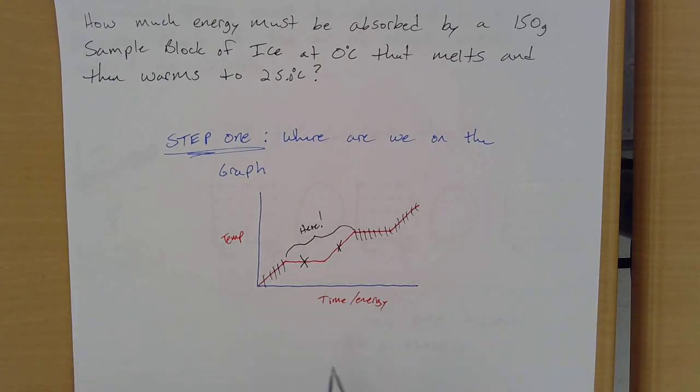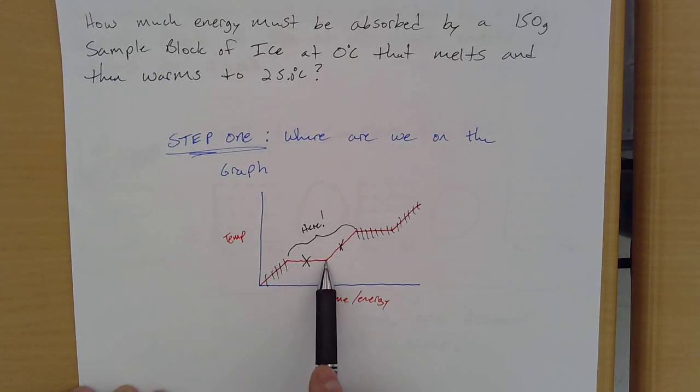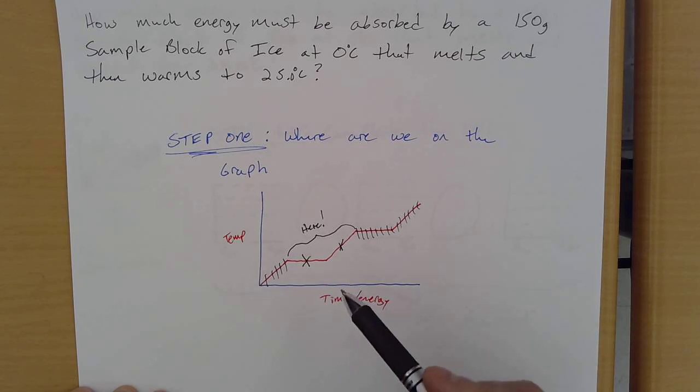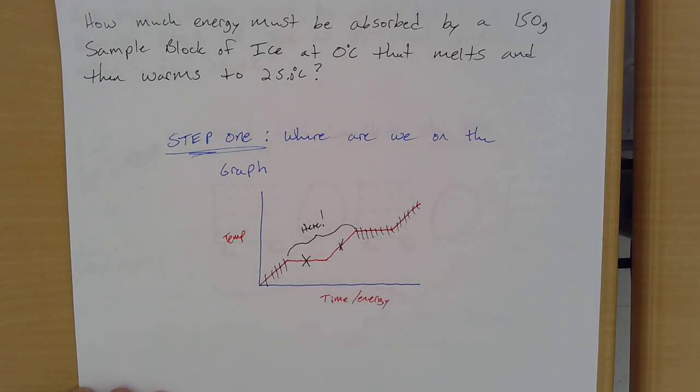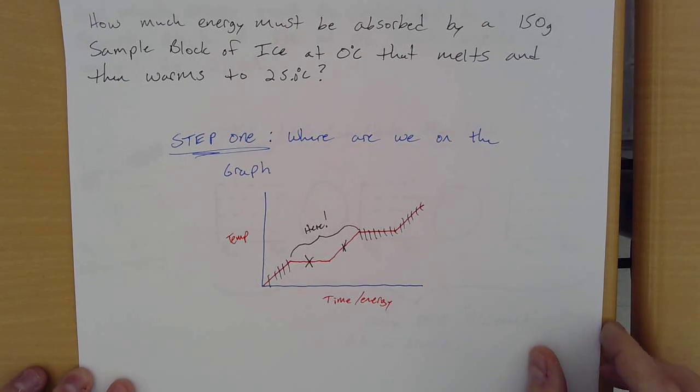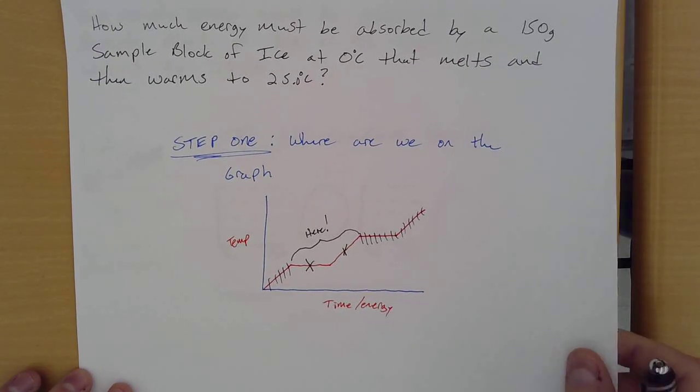So what already you can start to see, I'm going to need to use heat of fusion, right? I'm going to have to melt that ice. And then I'm also going to have to use that heat capacity for liquid water to get it up to 25 degrees, because I'm going to change the temperature.